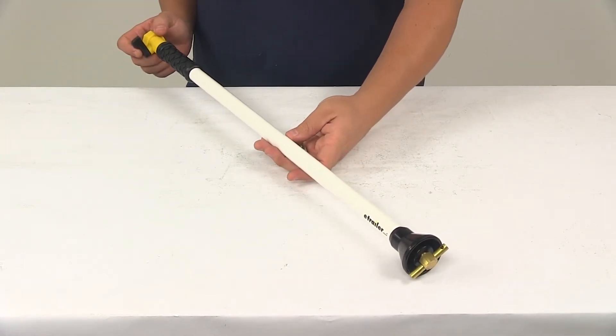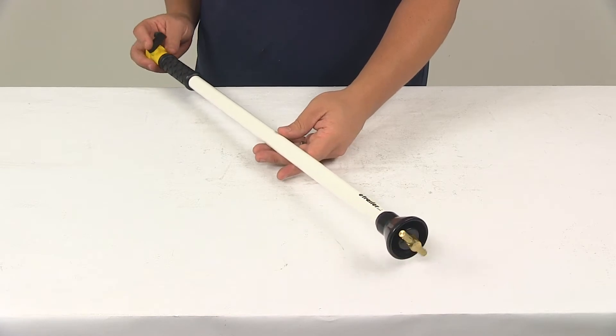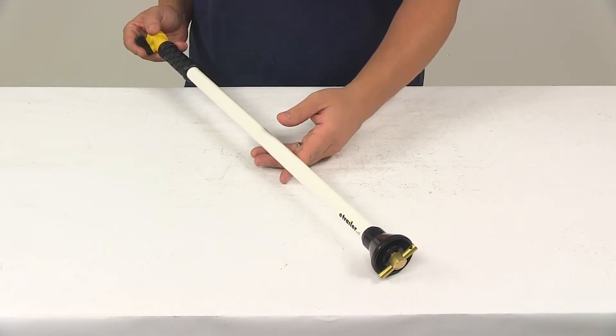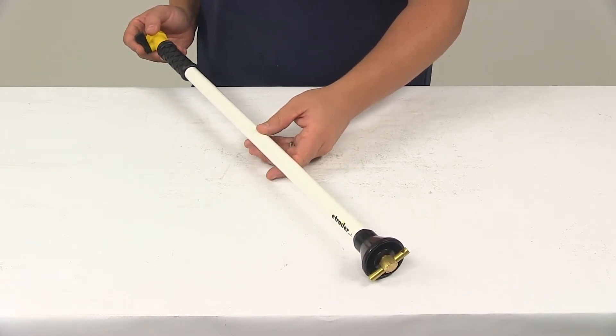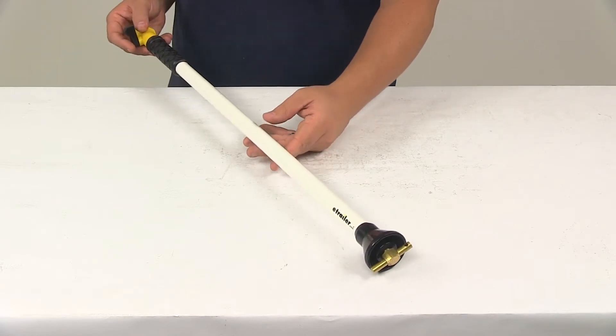Today we're going to be taking a look at the Swivel Stick RV Blackwater Tank Rinser. This rinser is designed to flush waste and odor-causing particles left after your RV's blackwater tank is drained.